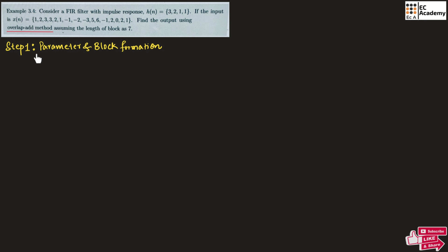The first step is parameter and block formation. Here first let us consider the impulse response h. The length of the impulse response is 4, that's why we can take M is equal to 4.